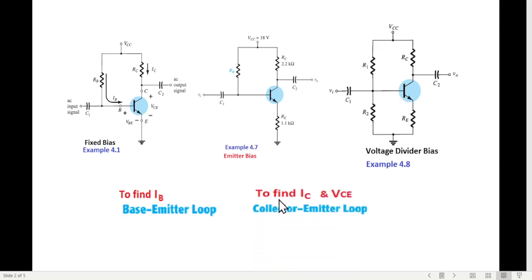The second thing we have to do is to find the collector current IC and VCE, we have to use collector-emitter loop. Now this is collector-emitter loop. In the second case, collector-emitter loop. So the same technique will follow in this problem also.